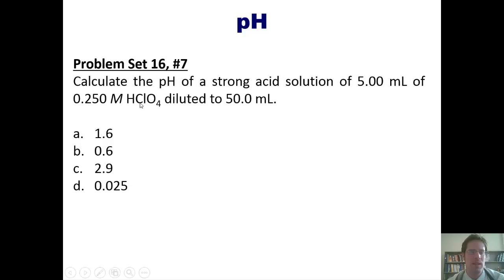And now this question. Calculate the pH of a strong acid solution of 5 milliliters of this concentration of perchloric acid diluted to 50 milliliters. Once again, you're welcome to attempt this on your own, and then if you like, you can click this link to watch me do it for you on the board.